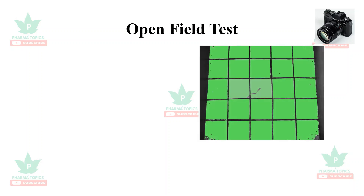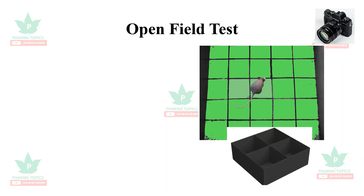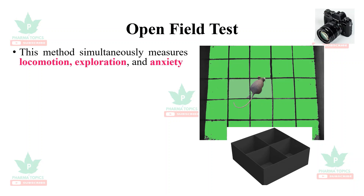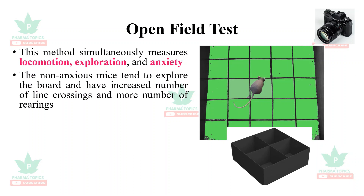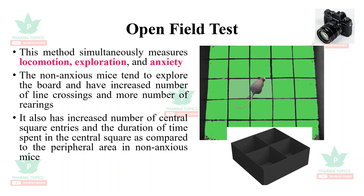The open field test is a very common test used in all pharmacology labs. The animal is placed in the central square and allowed to move through different squares — usually 16 or 20 squares, or an automated procedure is used. This method simultaneously measures locomotion, exploration, and anxiety. Non-anxious mice or rats tend to explore the board with increased line crossings, more rearing — standing on two legs and exploring the environment — increased central square entries, and more time spent in the central square compared to the peripheral area.